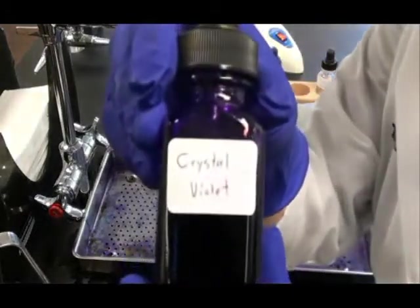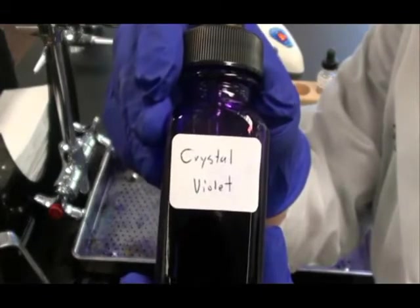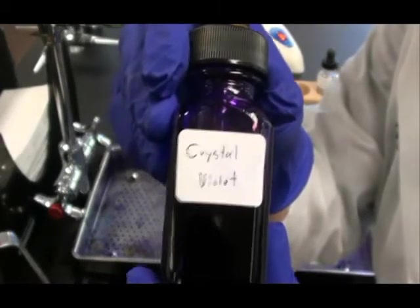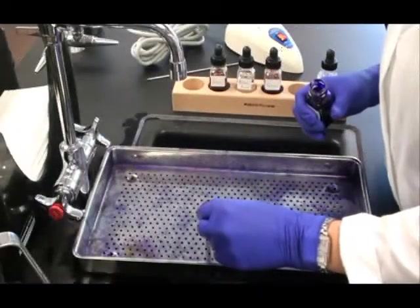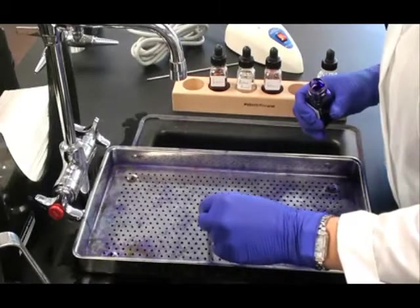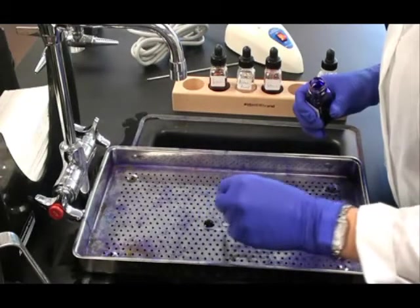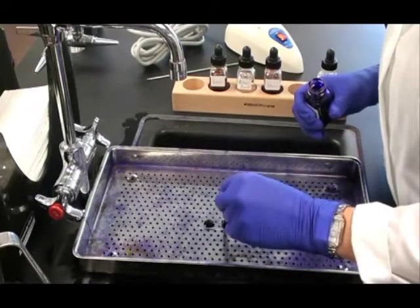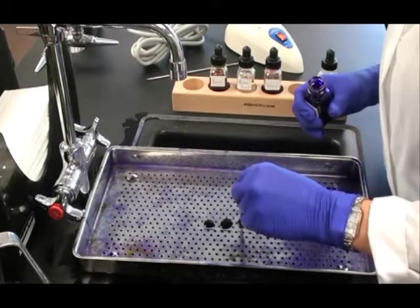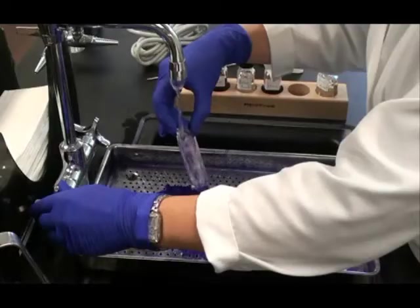So my first step is to apply crystal violet. This is my primary stain. I let drops of crystal violet fall onto all three of the smears on my slide. Then I wait for one minute.